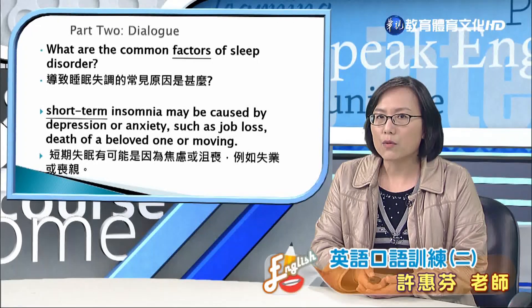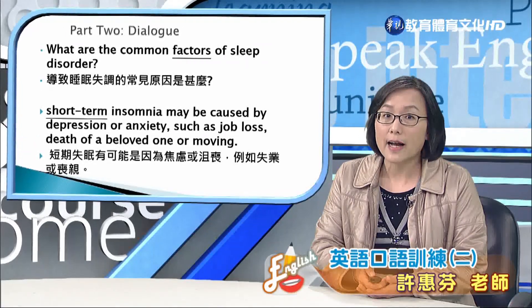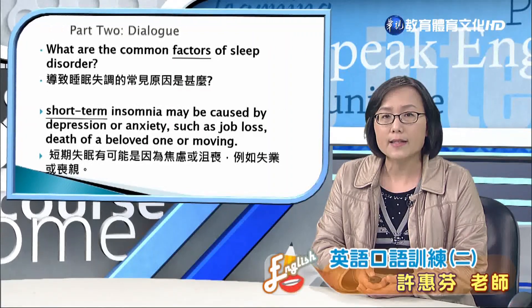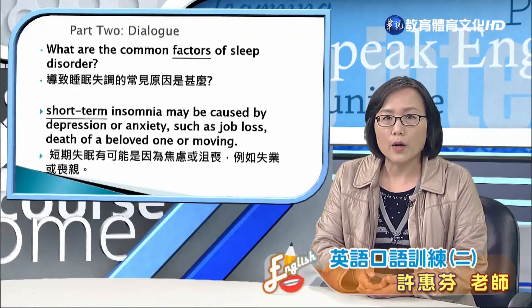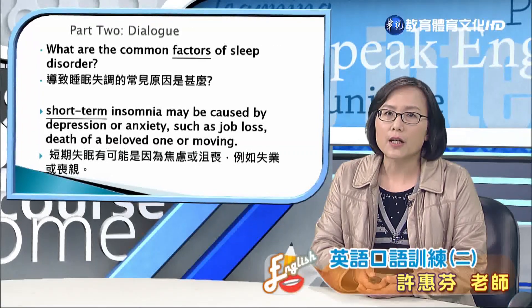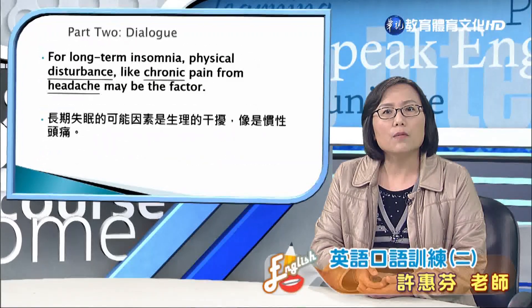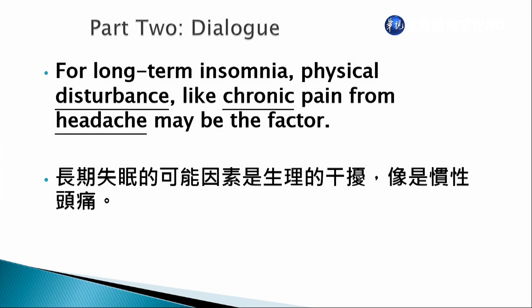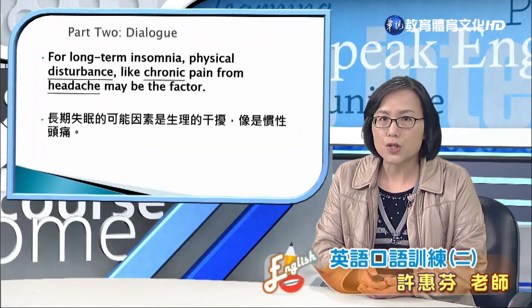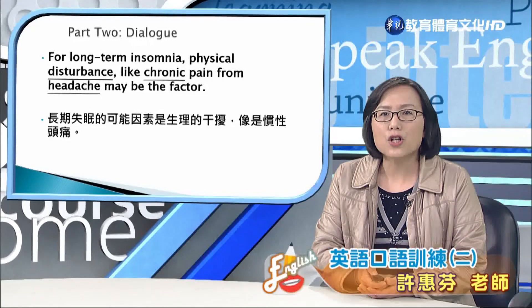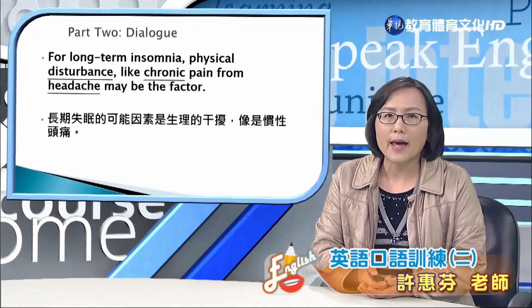沮喪跟焦慮的原因通常就是失業job loss，或者是失去親愛的家人death of a beloved one，或者搬家遷移moving。For long-term insomnia, physical disturbance like chronic pain from headache may be the factor. 長期失眠的話，可能的因素就是生理的干擾，像是慣性的頭痛。Physical disturbance就是生理方面的干擾，chronic pain就是長期的、經常的疼痛。